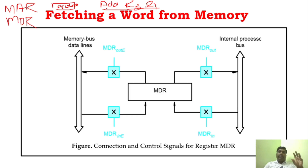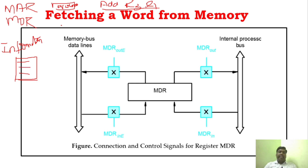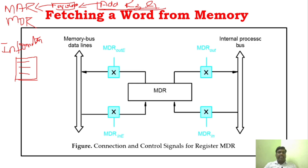Whenever you want to execute some instruction, say for example an instruction like ADD R3, R1 — the processor first needs to get this information from the memory. In computer memory, all instructions and data are saved. Whenever the processor needs any particular information it has to fetch it from the memory. The complete instruction must reach the processor, so what it does is inform the memory address register by giving the address of that particular instruction.